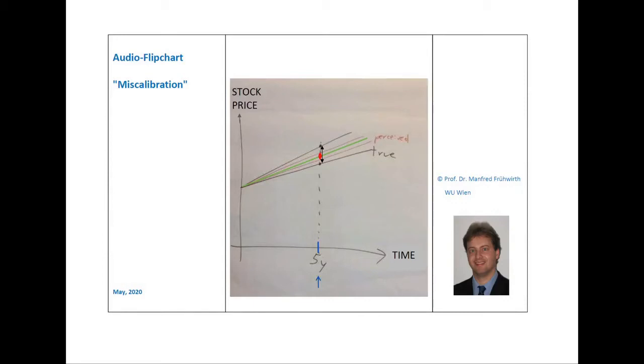On the flip chart, the expected stock price for different future times is shown by the green line. But of course, we have to keep in mind that the future stock prices are risky. Therefore, they are subject to a probability distribution.